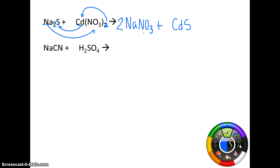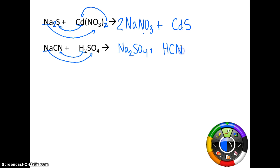Sodium cyanide plus sulfuric acid. Sodium and hydrogen are the cations and they're going to trade places. Sodium bonds to sulfate; hydrogen bonds to cyanide. Sulfate is 2−, so you get Na₂SO₄. Hydrogen is +1 and cyanide is −1, so you get HCN, hydrocyanic acid. This is not balanced — we have two sodium on the right but only one on the left, so we put a 2 in front of HCN. That takes care of the two cyanide we just made. Now we are balanced.